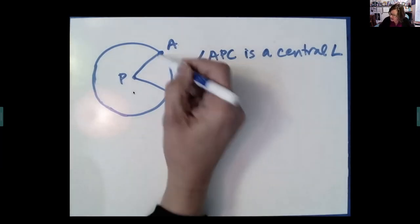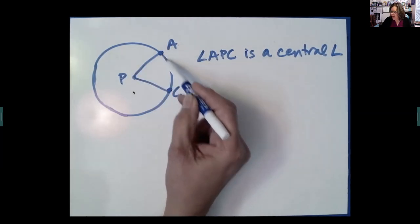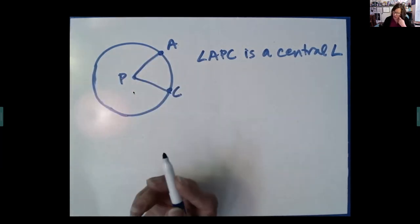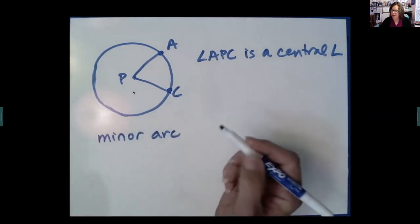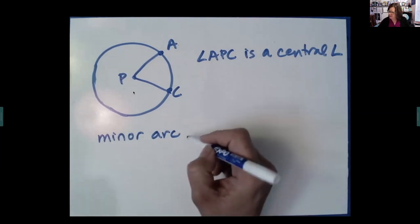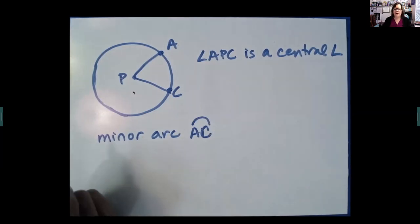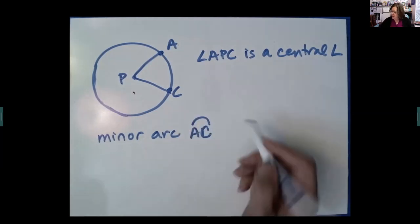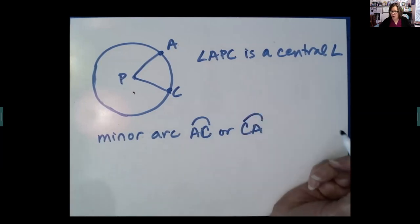This angle cuts the circle into two pieces — between A and C in this direction, and between A and C in that direction. The short direction is a minor arc, and we name a minor arc by naming its endpoints. So we would say arc AC — start at A and get to C the shortest way possible on the circle, and we put a little arc symbol over top. We could also name it arc CA; those are the same arc.